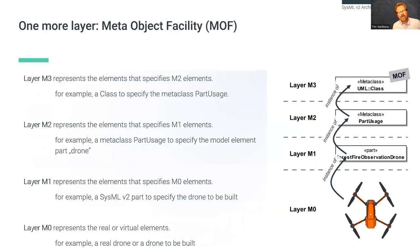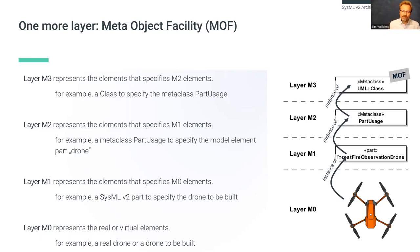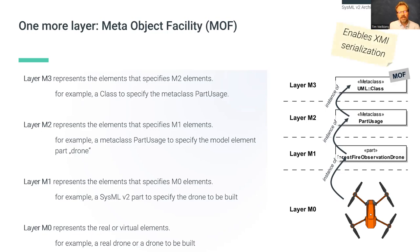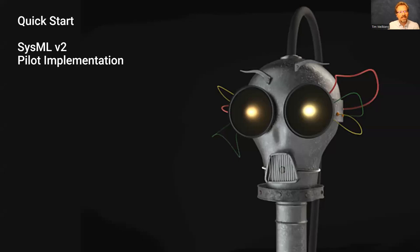There's one more layer: layer M3, which represents elements that specify M2. In SysML v2, layer M3 is the Meta Object Facility (MOF) — also the foundation for SysML v1 and UML. The well-known interchange format XMI is based on MOF, so SysML v2 models can also be serialized to XMI. However, there are additional interchange formats. We get XMI for free because SysML v2 is based on MOF, and one of the other interchange formats is a JSON-based format.